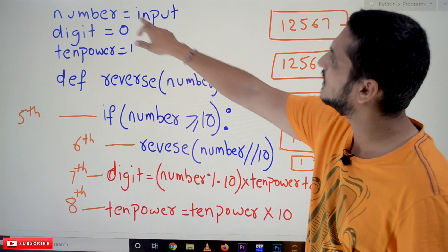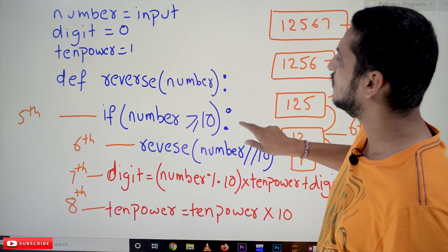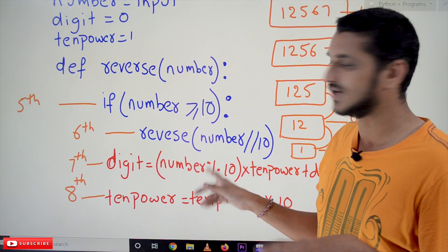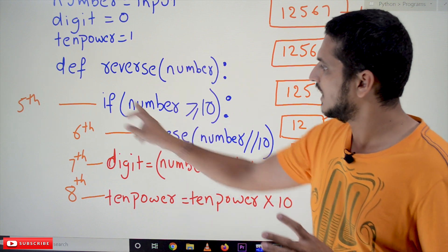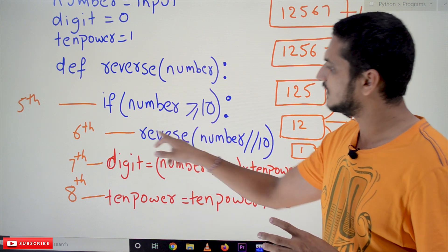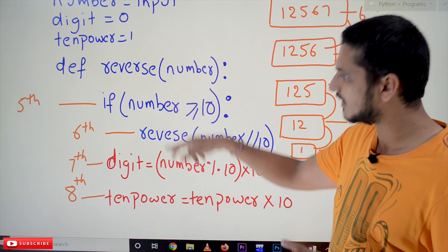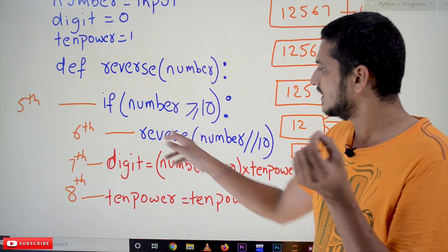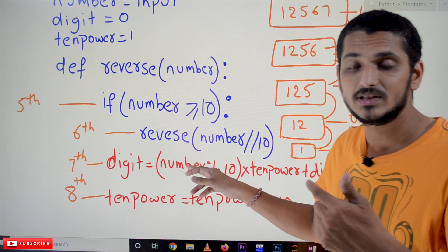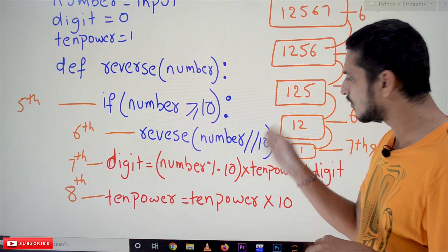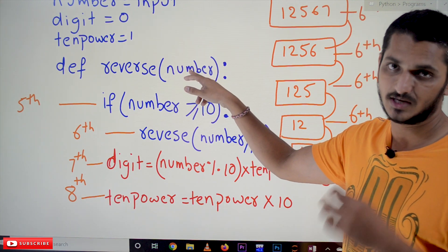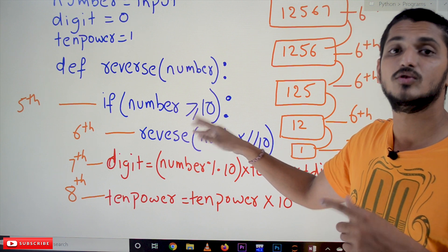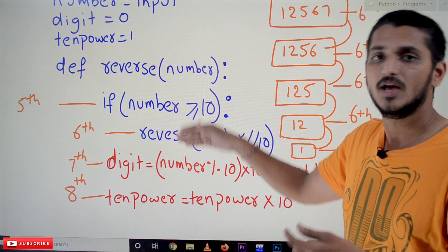This is our function: 'def reverse(number)'. We send the number 12567 to it. There are 4 lines of code in this function. If number is greater than or equal to 10, we call the function 'reverse' again with number floor division 10. So the first call sends 12567, the next sends 1256, then 125, then 12, then 1.